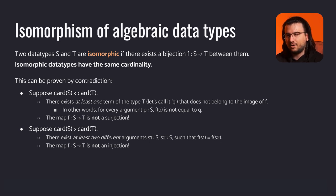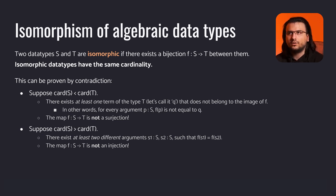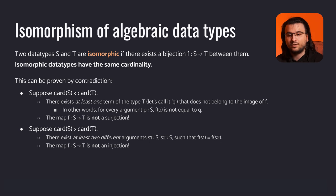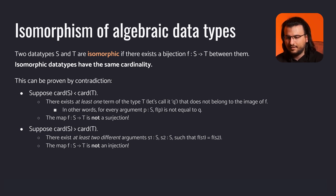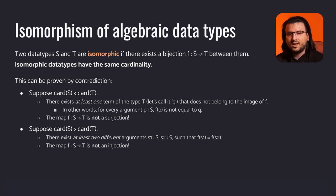First, suppose the cardinality of S is less than the cardinality of T. That means there exists at least one term of type T, call it q, that does not belong to the image of f — for every argument p in the domain S, f of p is not equal to q. Therefore, the map from S to T is not a surjection and thus not a bijection. Now suppose the cardinality of S is greater than the cardinality of T. This yields the existence of at least two different arguments, s1 and s2, both of type S, such that f of s1 equals f of s2. This means the map is not an injection and therefore not a bijection.